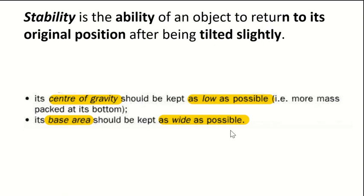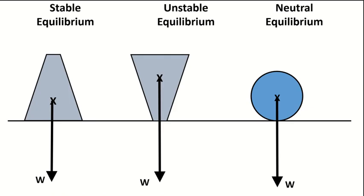So just like the MMA fighter, if both his legs are on the ground, he will have maximum base area. That's why he wants to also squat down like the sumo wrestler, right? So that's it for stable, unstable, neutral equilibrium.